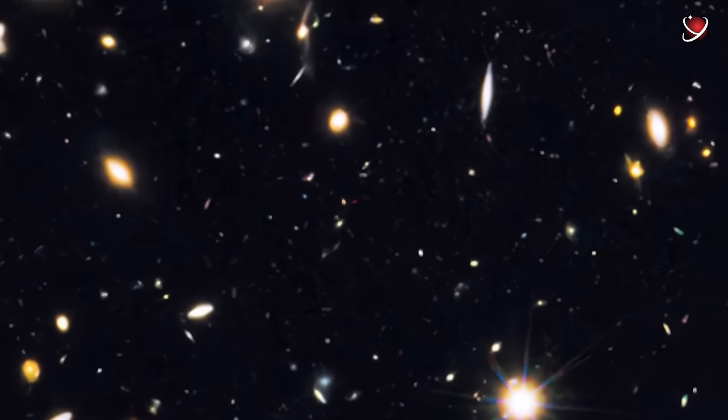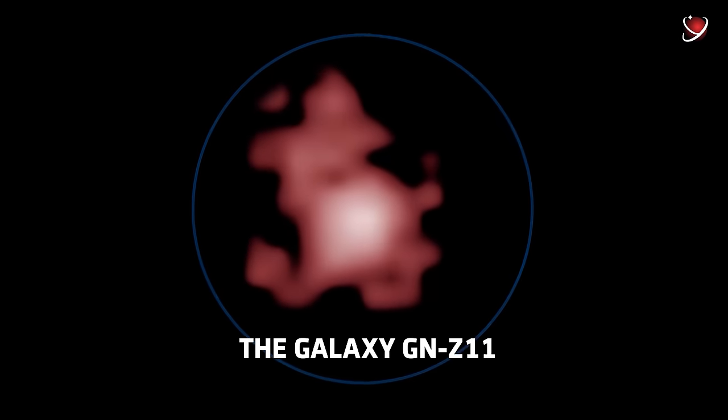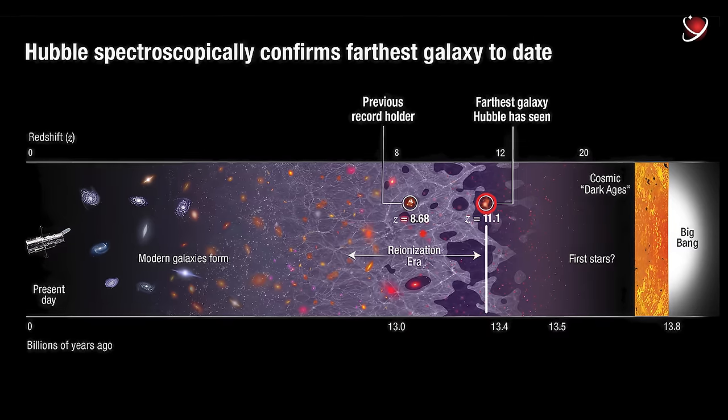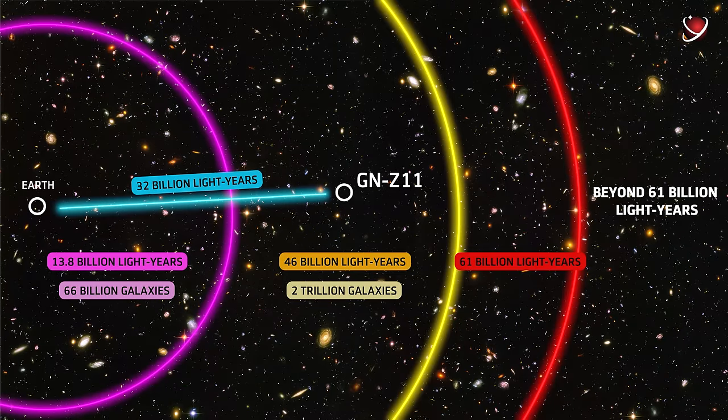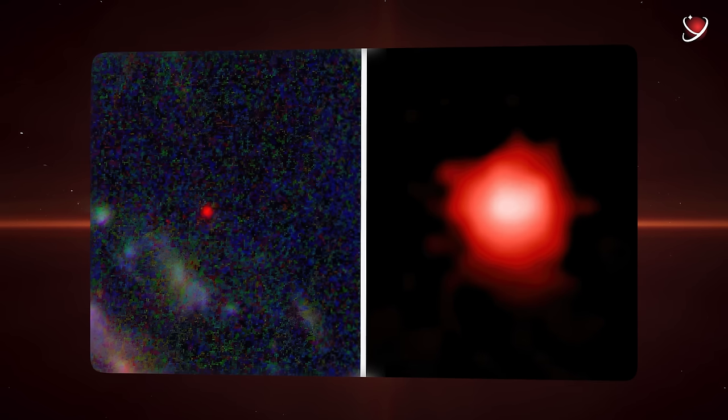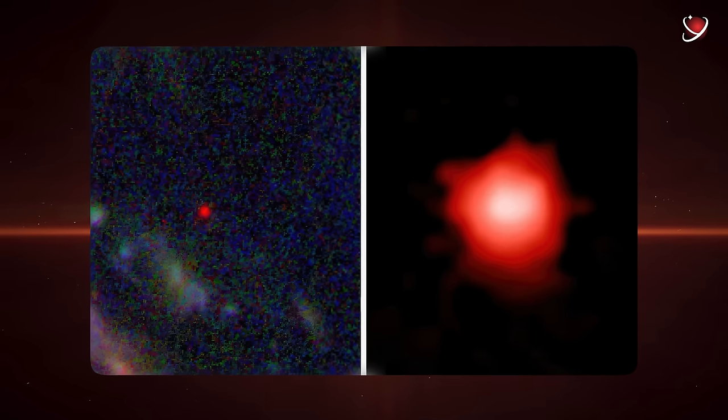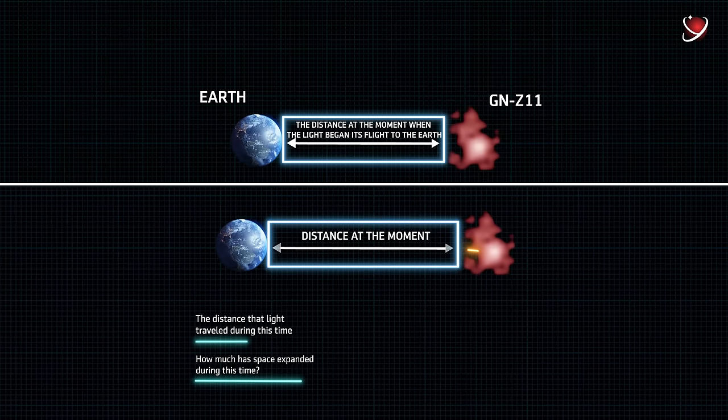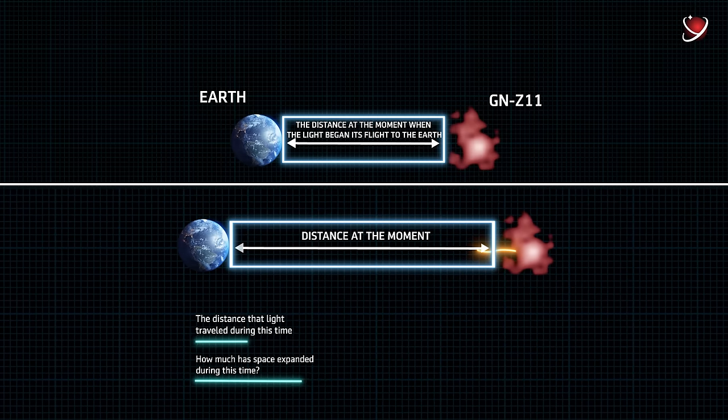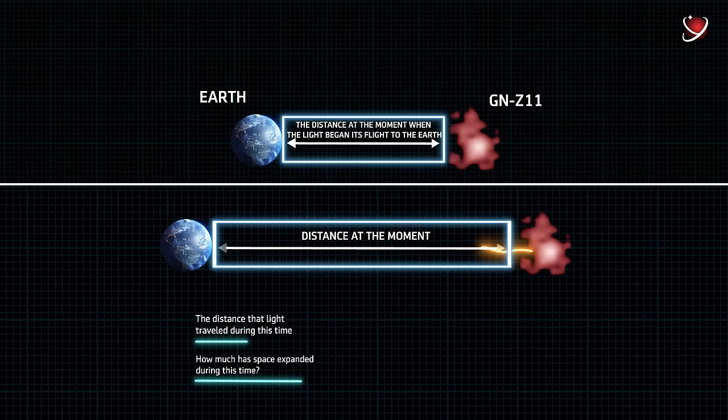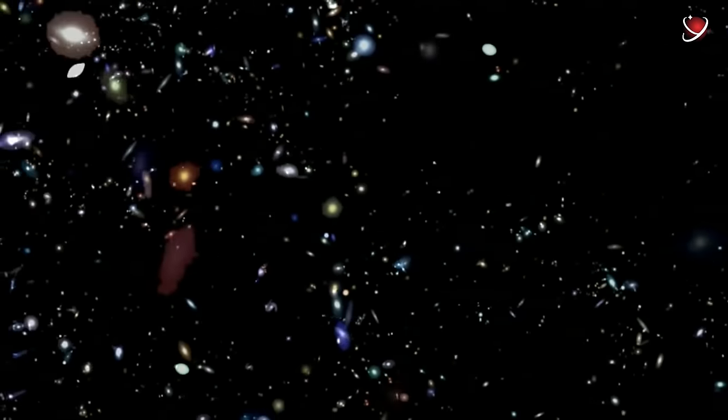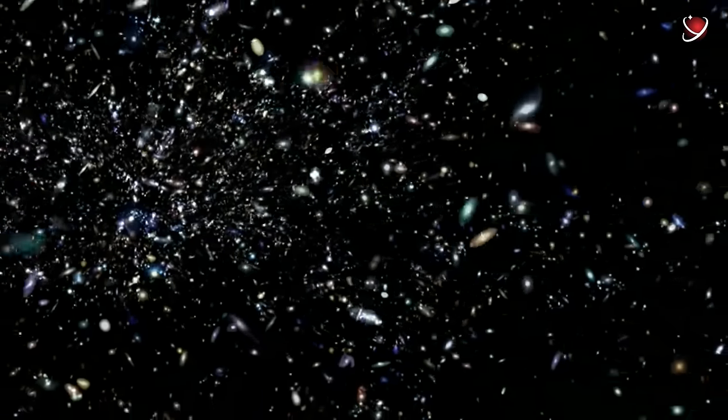For instance, consider the galaxy GN-Z11. This is one of the most distant galaxies we know today. Its age is 13.4 billion years, meaning its light was emitted 400 million years after the Big Bang. It's located at a distance of 32 billion light-years from us. We can still see it, but what we see is a farewell photo. The image of the galaxy GN-Z11 will slowly fade until it eventually vanishes forever. Because, as you understand, the light this galaxy is emitting right now will never reach us. Unless, of course, the expansion slows down again. Right now, the galaxy GN-Z11 is moving away from us at a speed of 687,000 kilometers per second, over twice the speed of light. Unfortunately, this is exactly where the sad conclusions begin.